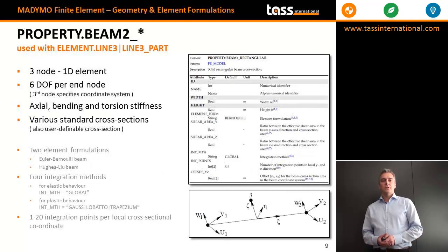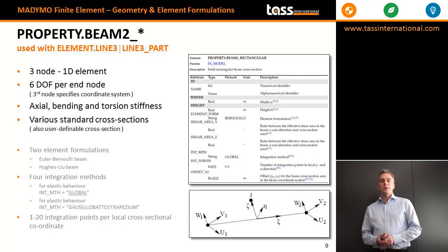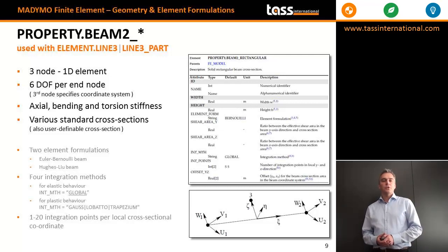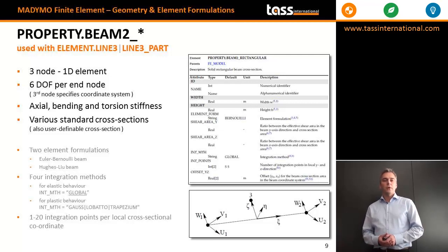The beam2 element is a 2-node 1D element with 6 degrees of freedom per end node, so rotations are also included. An element with property beam2 can resist axial, bending, and torsion stiffness. For this property type, various standard cross-sections are available in MARIMO.